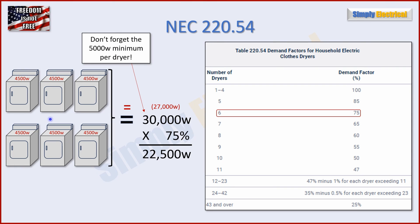What if we have six dryers, all 4,500 watts? Adding them straight gives 27,000, but with the 5,000 watt minimum each, it's 5,000 times 6 = 30,000 watts. Now we go to table 220.54. For six dryers, the demand factor is 75%. Applying 75% to 30,000 gives us 22,500 watts, and that is our final value for the load calculation.